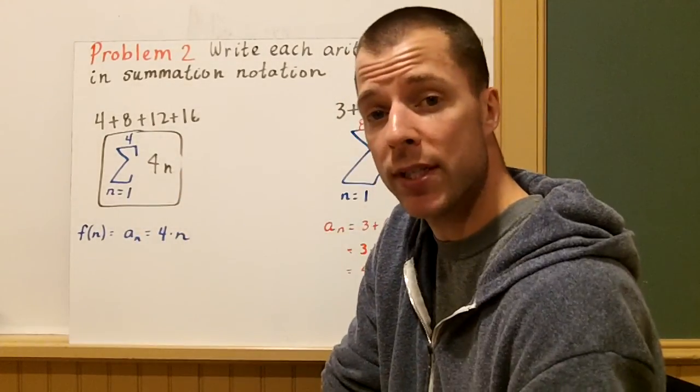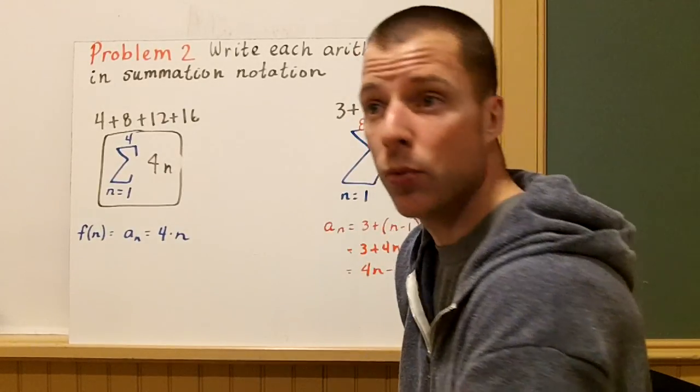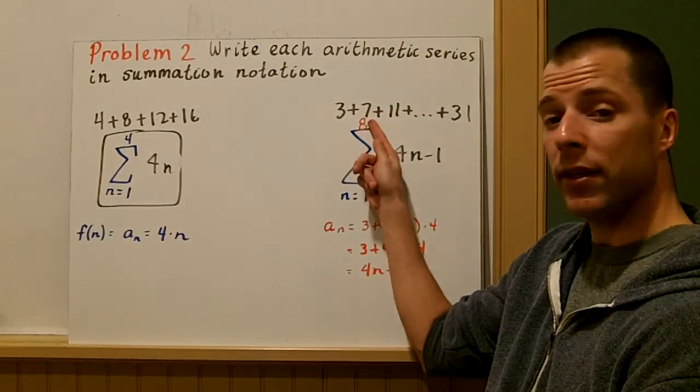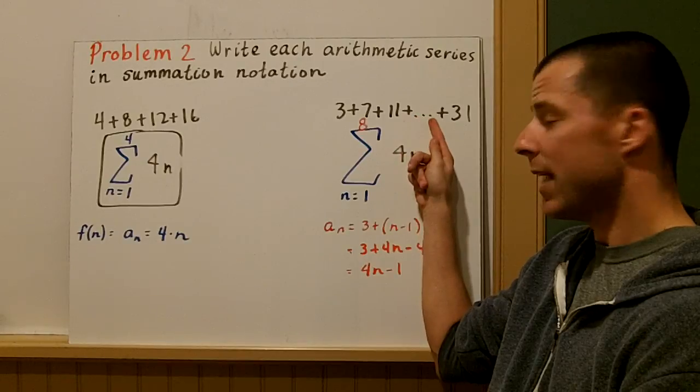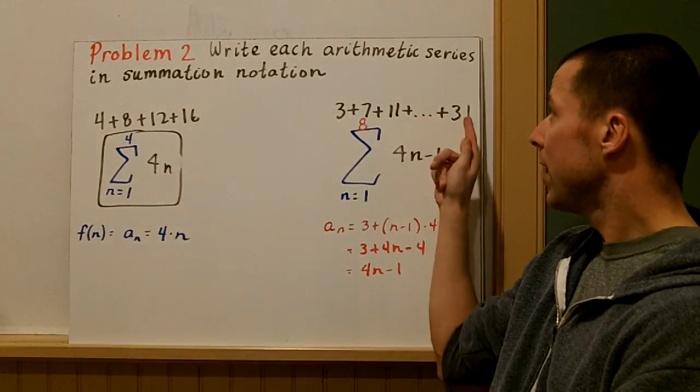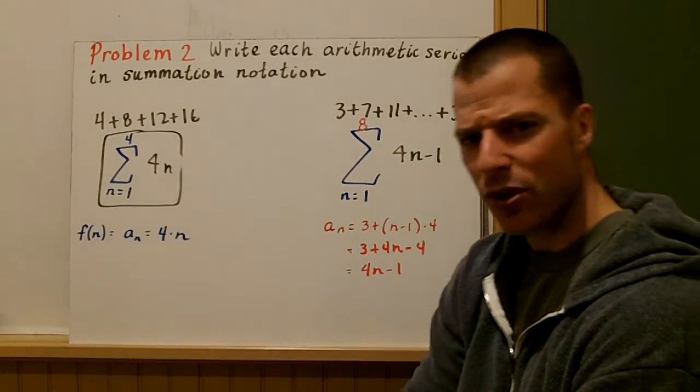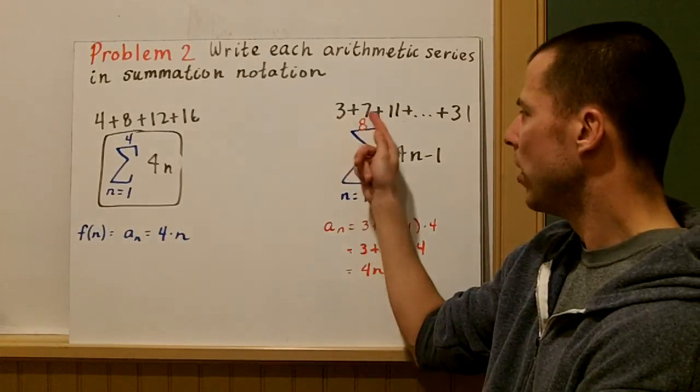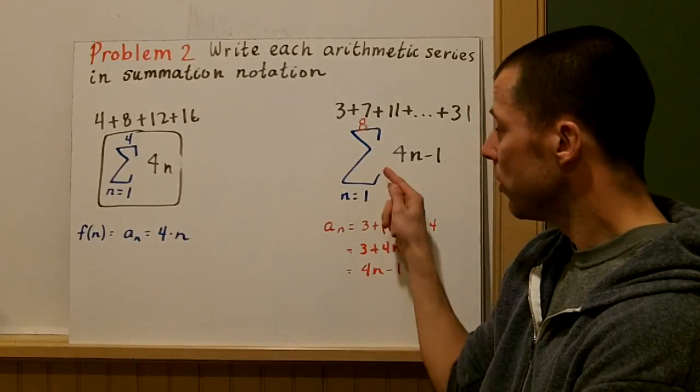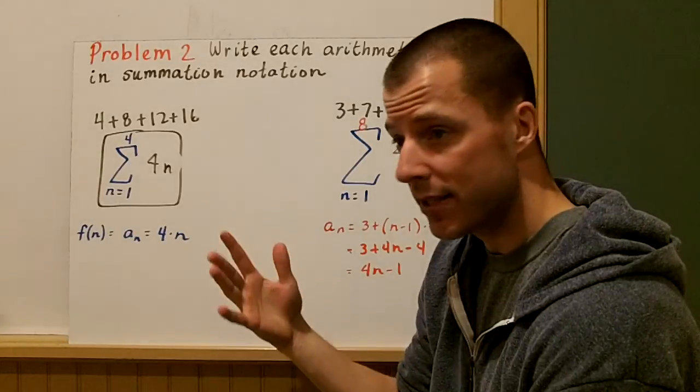The second one's a little bit different. We're actually going to use the arithmetic sequence rule for explicit equations. We have 3 plus 7 plus 11 plus dot dot dot plus 31. So I still have a start, I still have an end. This is finite. However, we're missing some terms in between. So it's not 4 terms.